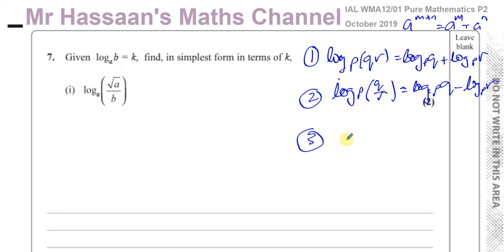And the third law that we're going to be using is called the power law. So for example, log to the base P of Q to the power of R can be expressed as R times log to the base P, Q. These are the three main laws of logarithms, which we're going to be applying in basically any logarithm question that you'll find.